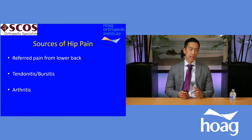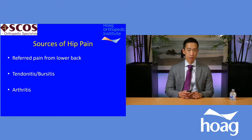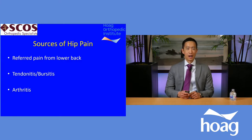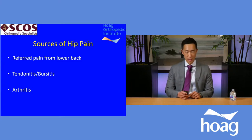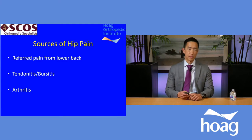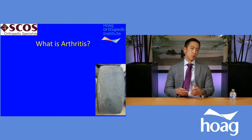Another very common source of pain is arthritis — a loss of that cartilage surface we discussed — which causes wear and tear in the hip joint. That's the main topic we'll focus on. Not all hip pain is due to arthritis, and just because you have hip pain doesn't mean you're destined to have arthritis. Most issues can be treated and diagnosed with appropriate testing by your primary care doctor or an orthopedic surgeon.